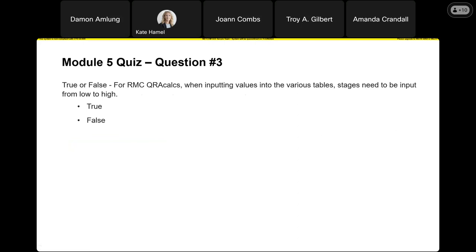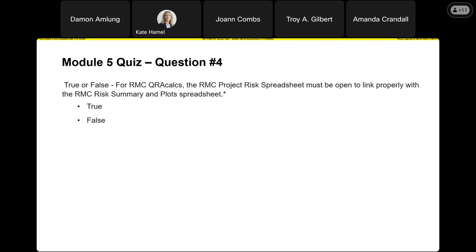Question number three, true or false: for RMC QRA calcs, when inputting values into the various tables, the stages need to be input from low to high. That is true. If you don't, the interpolation macro formulas that are already punched in for you will not be correct and you will get an error. Always put those stages in low to high. The final question, true or false: the RMC project risk spreadsheet must be open to link properly with the RMC risk summary and plot spreadsheet — that is also true, just the way those things are set up.